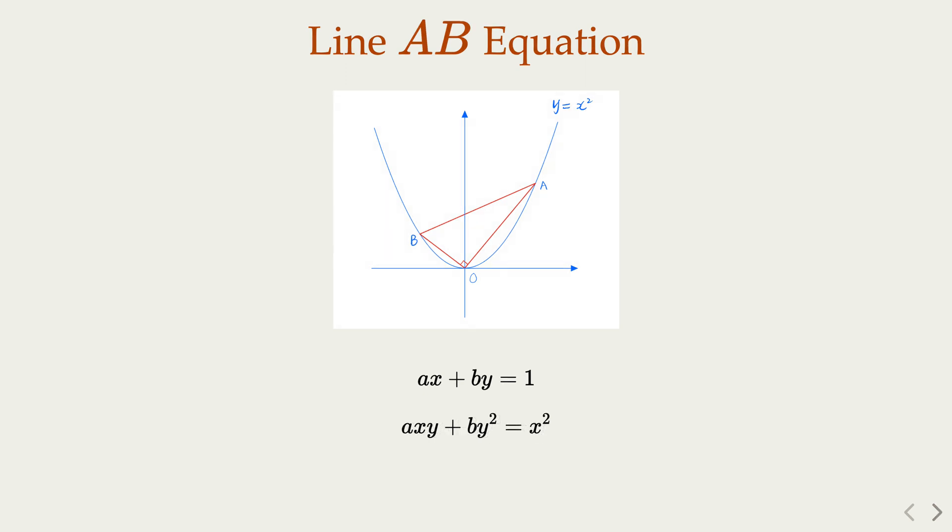Now we're going to do another trick. Here, this is a homogeneous equation in x and y. The degree is also 2. So we divide x squared on both sides. What do we get? We're going to get this. When you think about it, let's look at this equation.